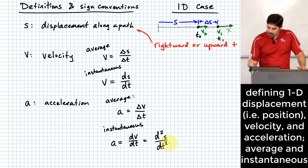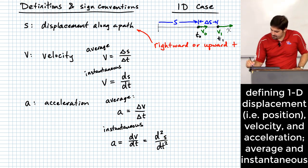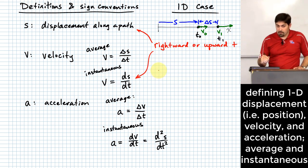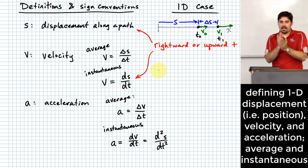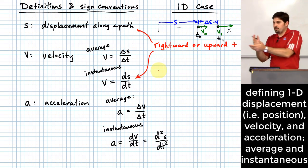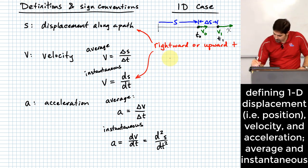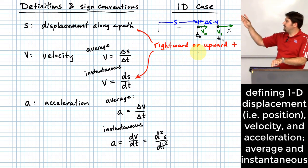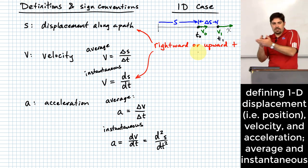For all of these, rightward and upward defines our sign convention. For velocity, moving further and further to the right means you have a positive velocity. If you are going further and further to the left, that means you have a negative velocity.